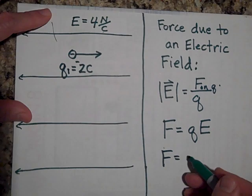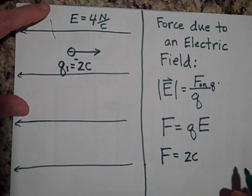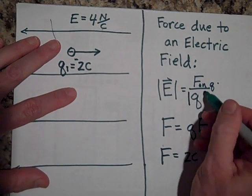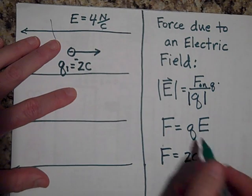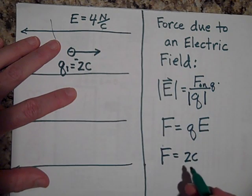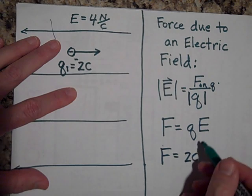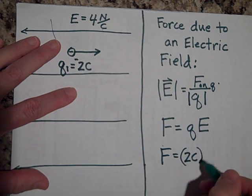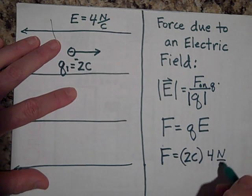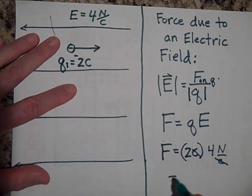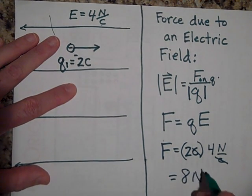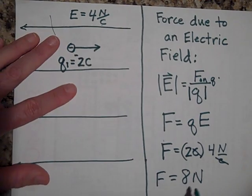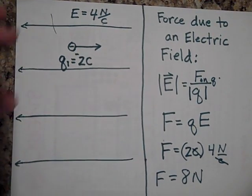There's going to be two coulombs. We'll put an absolute value sign here. This is just giving me the magnitude. So it's going to be two coulombs times four newtons per coulomb. You see that the coulombs cancel and we're left with eight newtons of force. That's the electrical force on Q1.